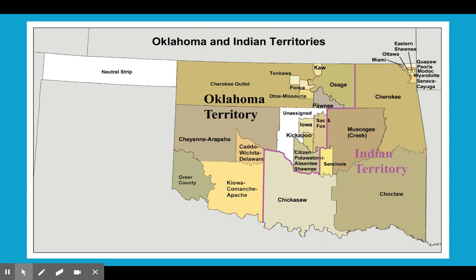The unassigned territories in white are going to be the places where we see a lot of the land run settling by people who are not members of a Native American tribe. Those unassigned lands will start to become a part of Oklahoma Territory, but they're not going to be tribal membership people. They're just going to be settlers moving west — mainly white, not all white — who are going to settle in those unassigned territories.